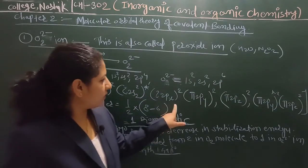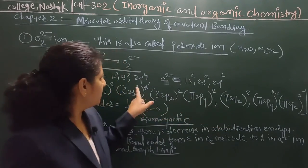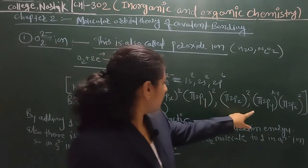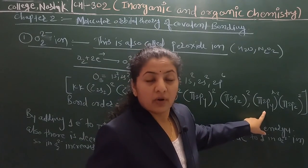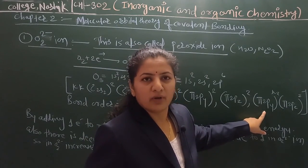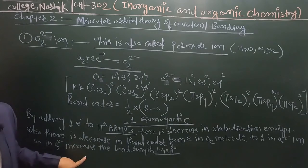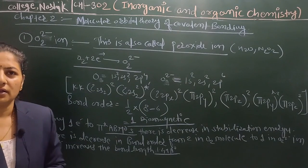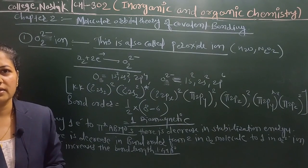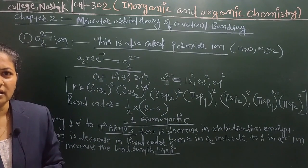There is no unpaired electron in any bonding or anti-bonding molecular orbital of O2 2-minus, and that is why it is diamagnetic. This is all about O2 plus, O2 minus, and O2 2-minus ions.